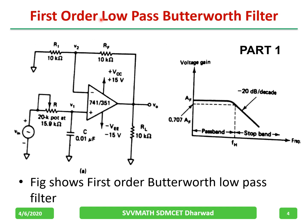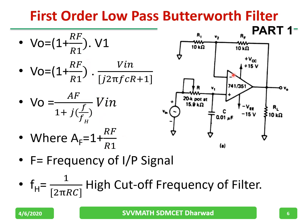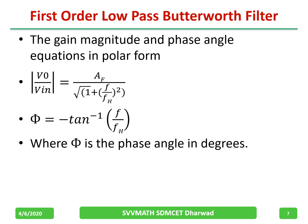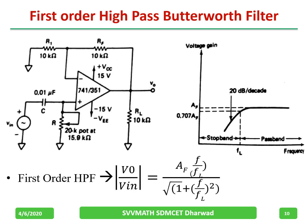For the first order low pass Butterworth filter, we already discussed in part 1 the 20 dB per decade roll-off. At the non-inverting terminal we are given the input, and the gain is given by 1 plus Rf by R. In the low pass filter we had a capacitor; now in the high pass filter we will have a resistor on one side and a capacitor on the other. In the high pass filter, simply by interchanging the frequency-determining resistors and capacitors from the low pass filter, we get a high pass filter. In the circuit diagram only R and C are interchanged; the rest remains the same — 20 dB per decade.